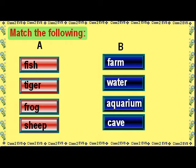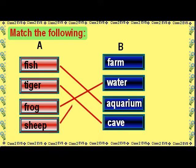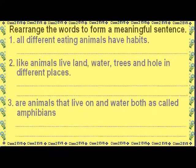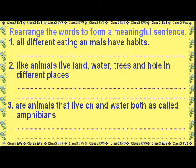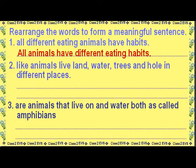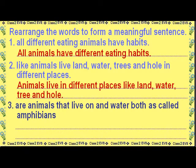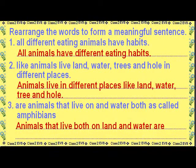Match the following: Fish matches with Aquarium. Tiger matches with Cave. Frog matches with Water. Sheep matches with Farm. Rearrange the words to form a meaningful sentence: All animals have different eating habits. Animals live in different places like land, water, trees, and holes. Animals that live both on land and water are called amphibians.